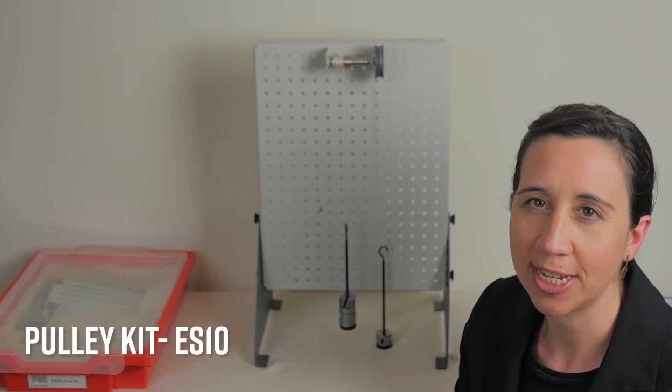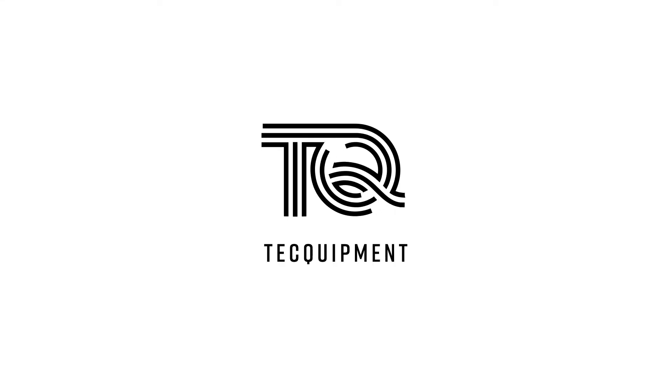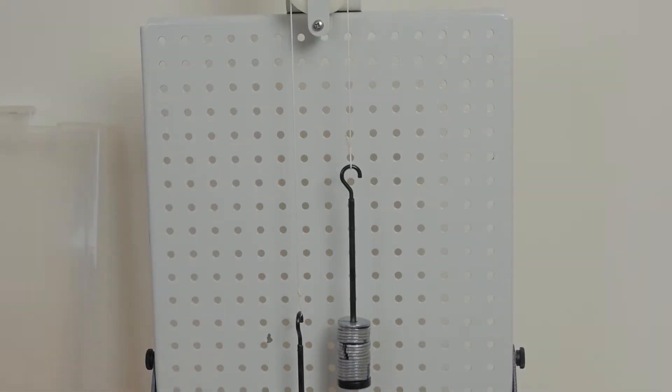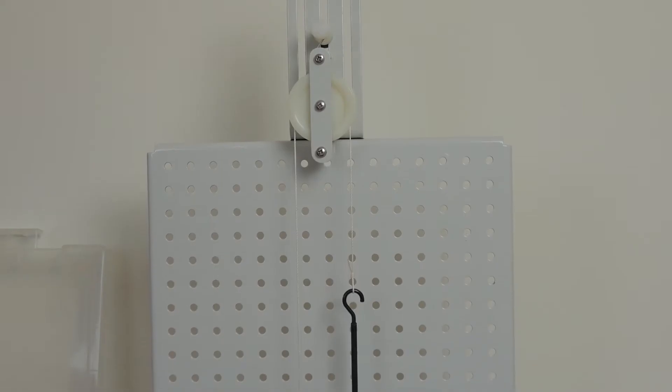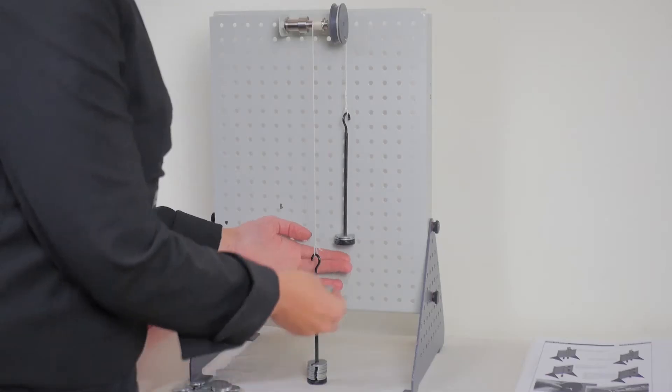In this video, we will be demonstrating the Pulley Kit, the ES10 in the Engineering Science range from Tech Equipment. With this kit, students can learn about simple, fixed, movable and compound pulleys, the western differential pulley and the wheel and axle.